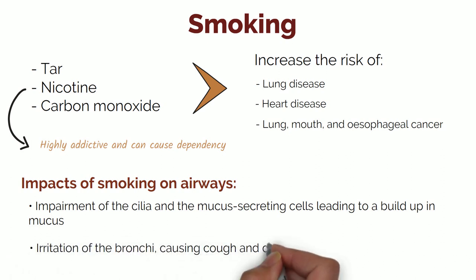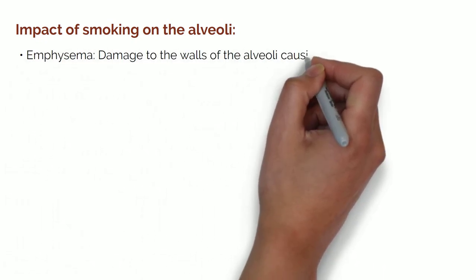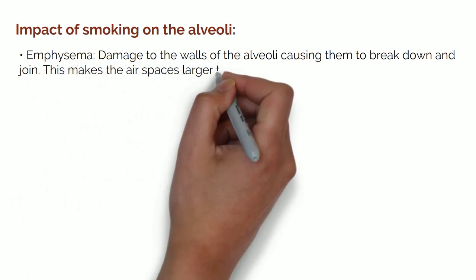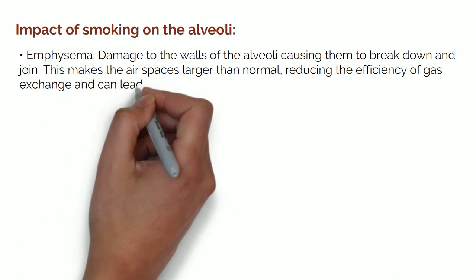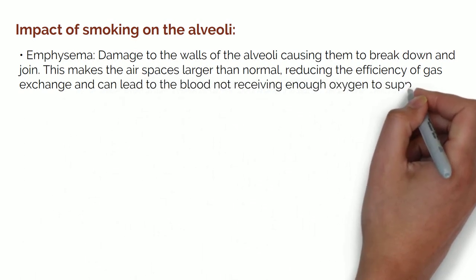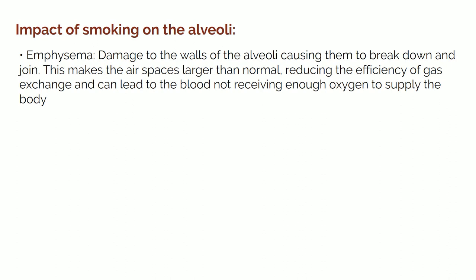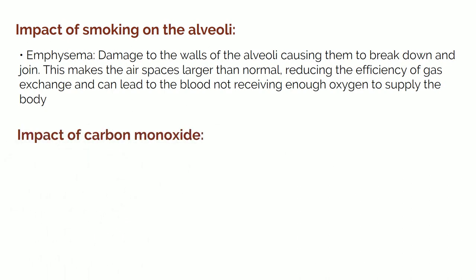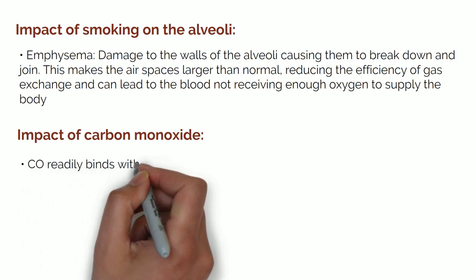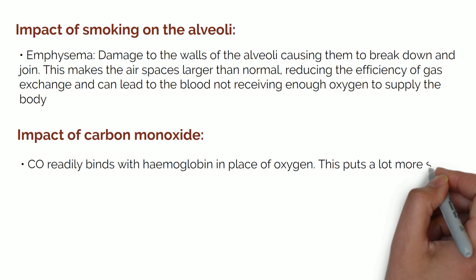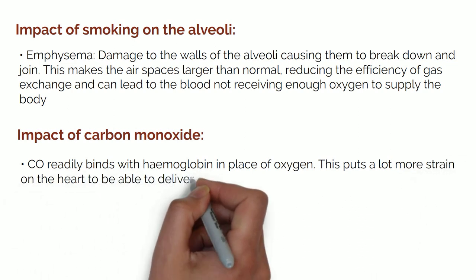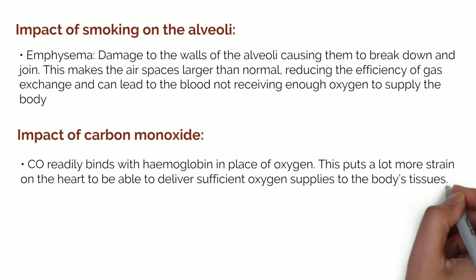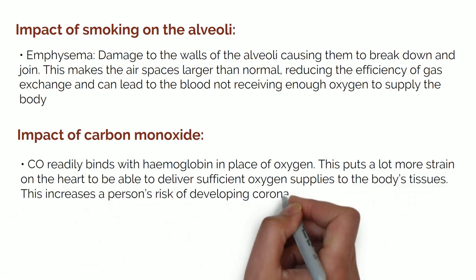Irritation of the bronchi can cause bronchitis, resulting in coughing and damage to lung tissue. Smoke can damage the walls of the alveoli, causing them to break down and join together, making the air spaces larger than normal. This reduces the efficiency of gas exchange and can lead to the blood not receiving enough oxygen to supply the body. This disease is known as emphysema and can make it difficult for sufferers to carry out even mild exercise. The carbon monoxide component of smoke is particularly damaging because it readily bonds with haemoglobin in place of oxygen, putting strain on the heart and increasing the risk of coronary heart disease or stroke.